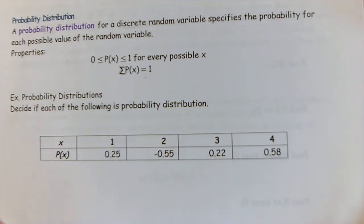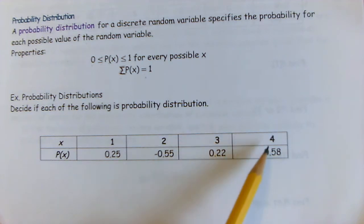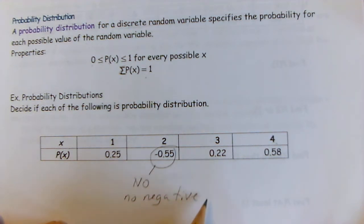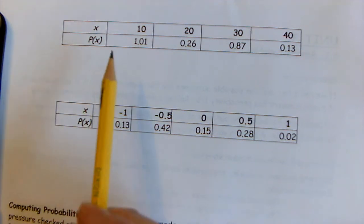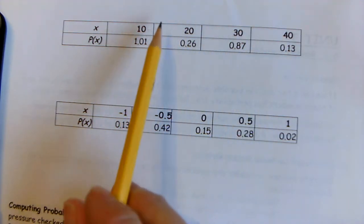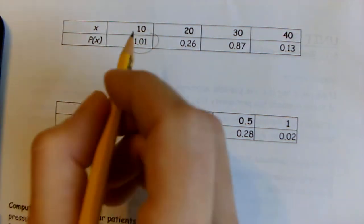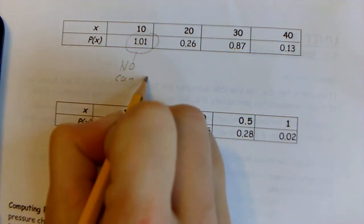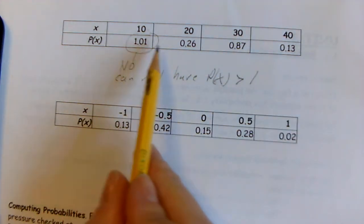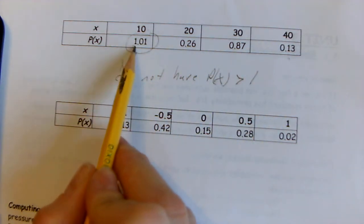Let's decide if each of the following is or isn't a true probability distribution. In the first distribution, random variable X can be 1, 2, 3, or 4 — this is not a probability distribution because you cannot have a negative probability. In the next distribution, X values are 10, 20, 30, 40 — this is not a probability distribution because you cannot have a probability greater than one; it's already over 100%.